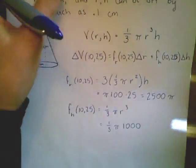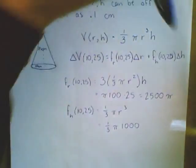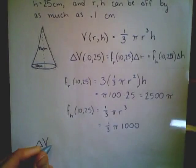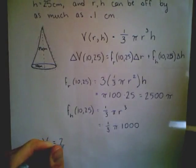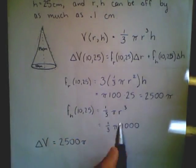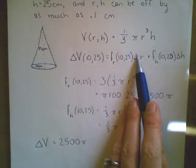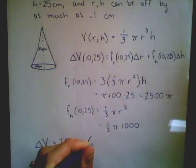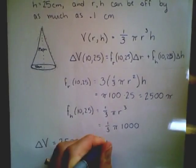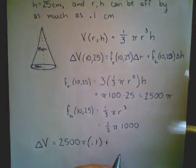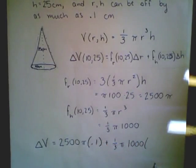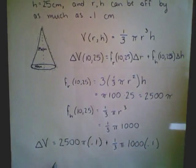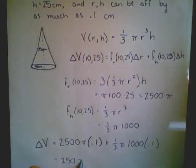Plugging these into our error approximation equation, we find that delta V equals f_r, which is 2,500π, times the error in r. How much can r be off by? It can be off by as much as 0.1. Then I add my derivative with respect to h, which is (1/3)π(1000). Delta h can be off by as much as 0.1 as well.